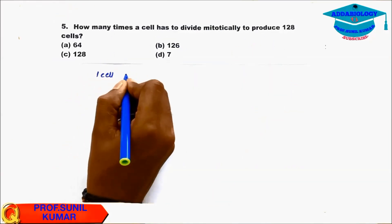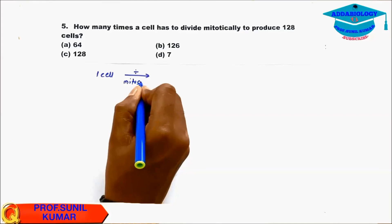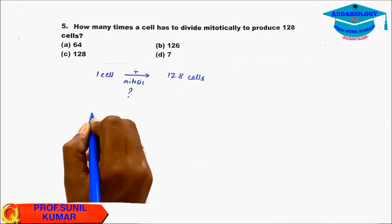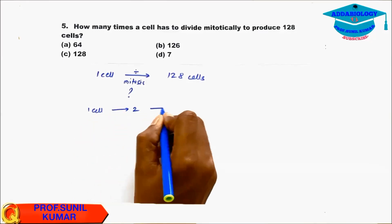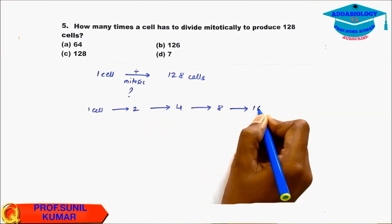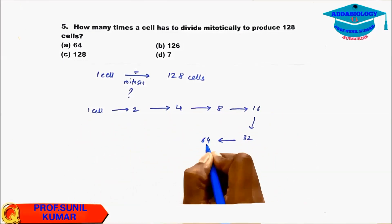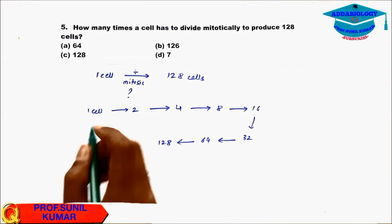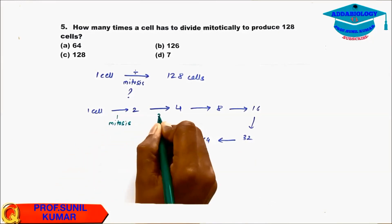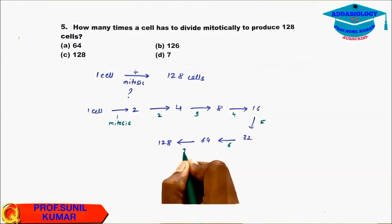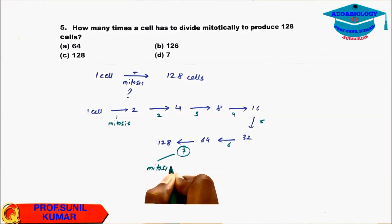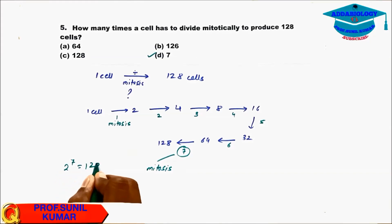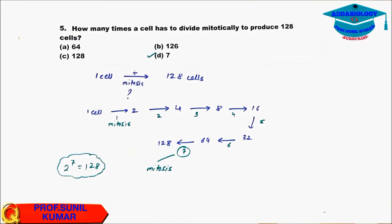Question 5: How many times does a cell divide to form 128 cells? Starting from 1 cell: 1→2→4→8→16→32→64→128. Every time the number doubles — that is 7 mitotic divisions. So 7 mitoses are required to get 128 cells, since 2^7 = 128.